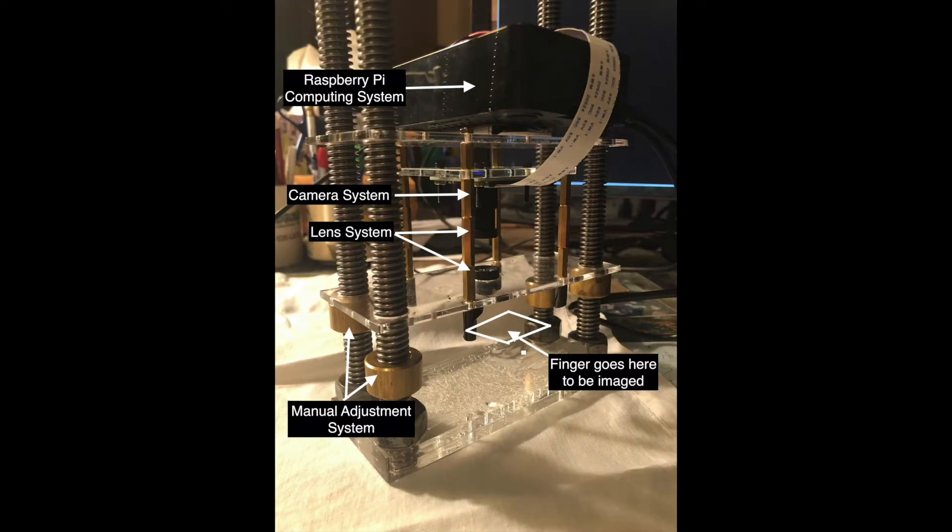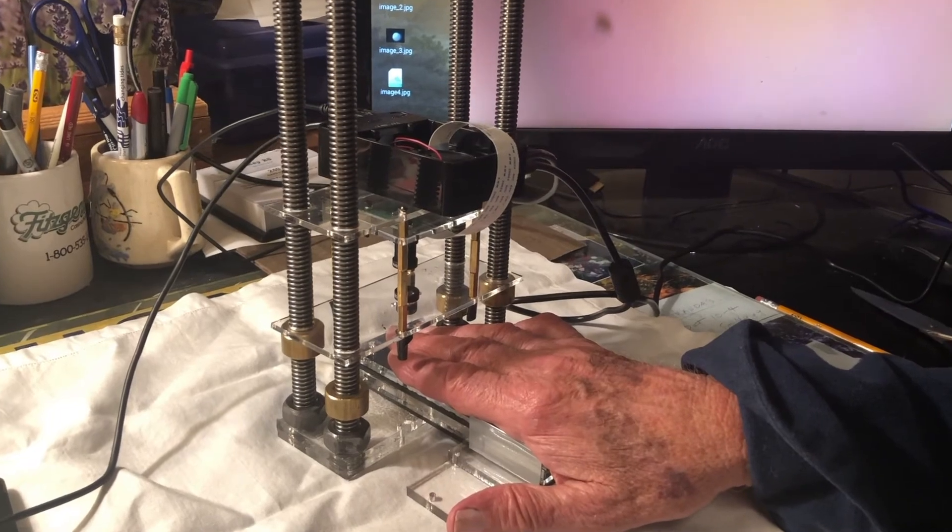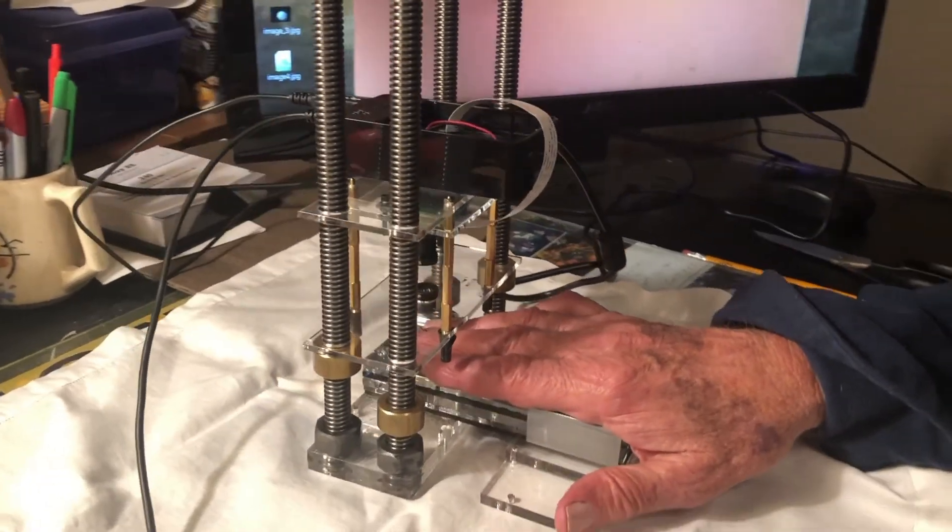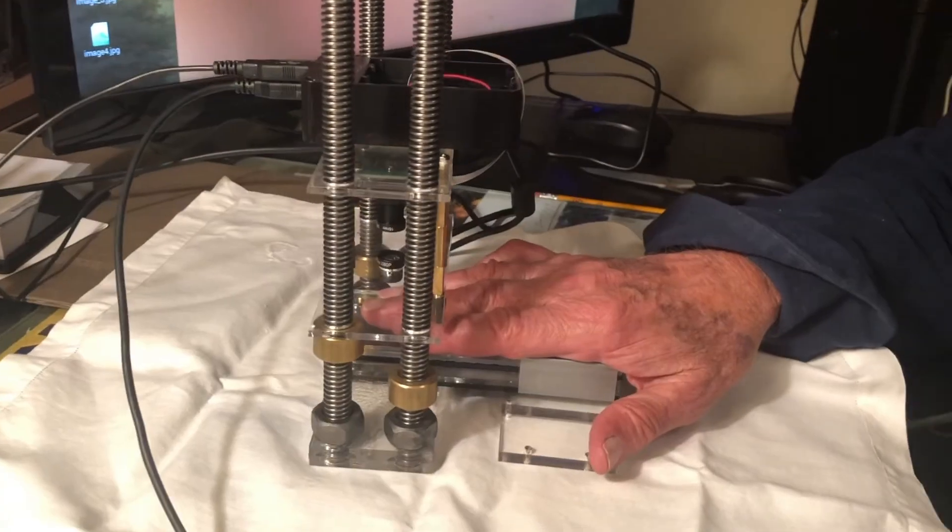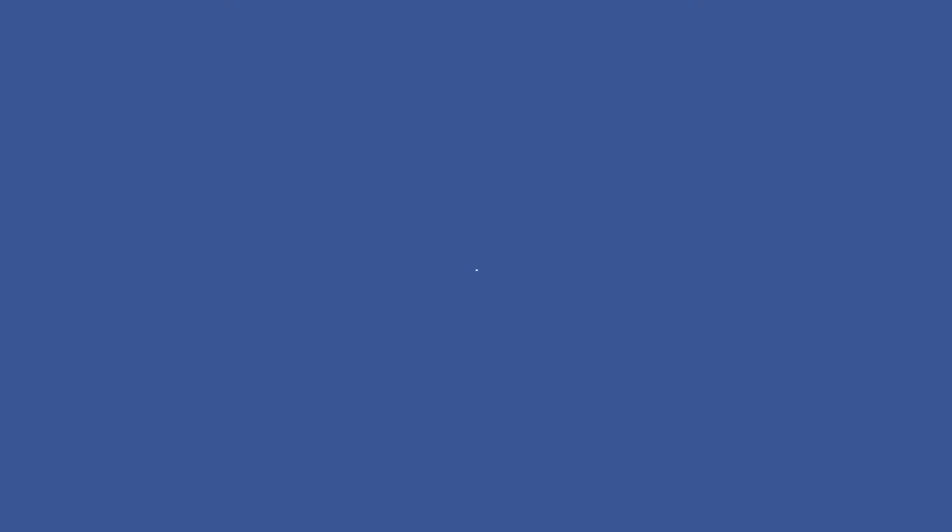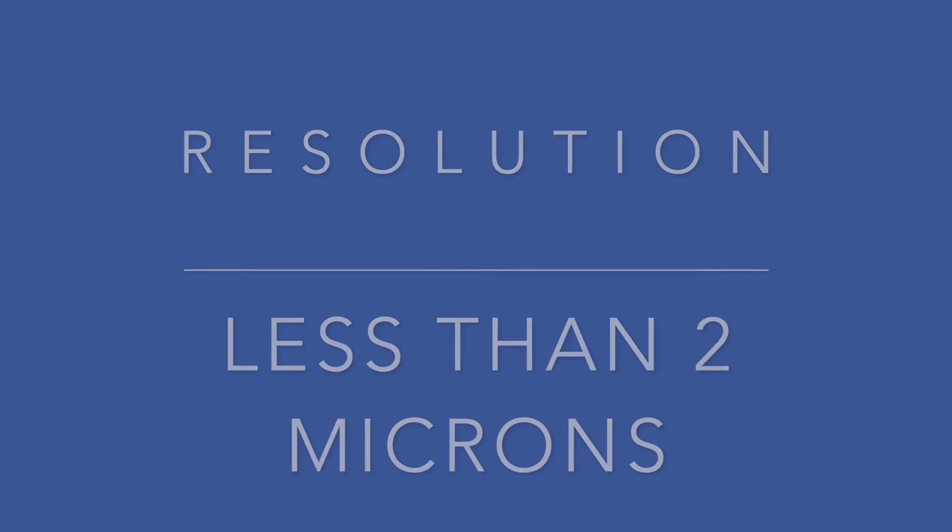Introducing the Onchoscope, a low-cost, high-resolution microscope that addresses the inadequacies of current diagnostic methods. The Onchoscope aims to have a false negative rate of less than 20% as opposed to skin snips' false negative rate of over 40%. This is achieved by having a resolution of less than 2 microns.